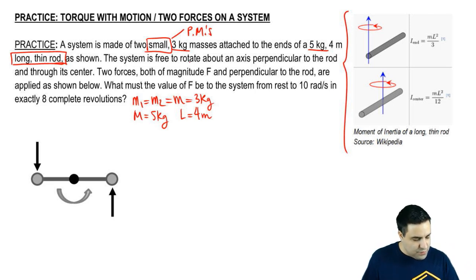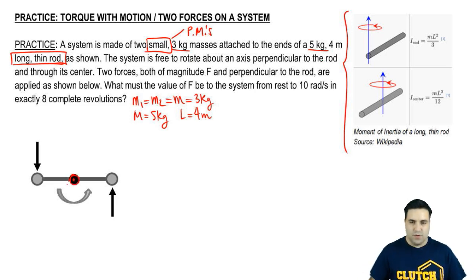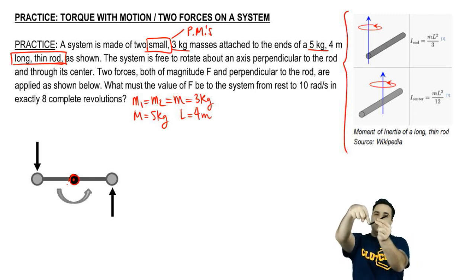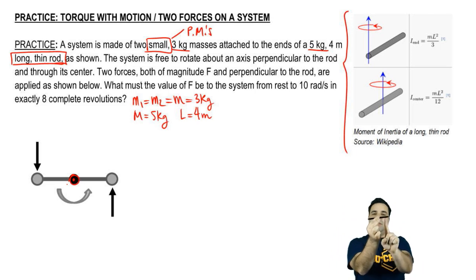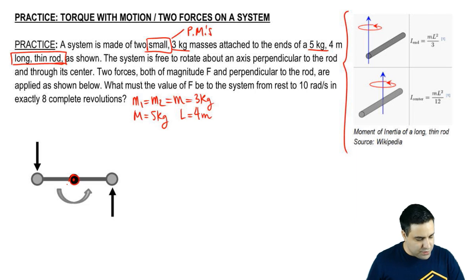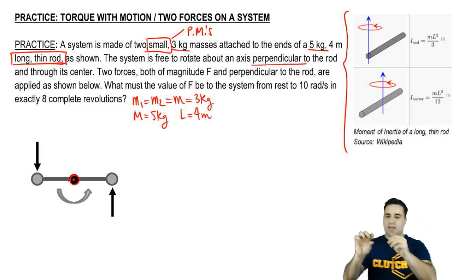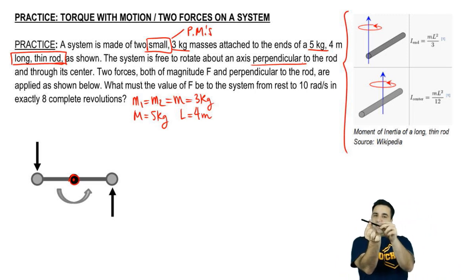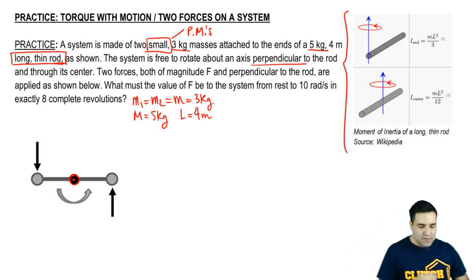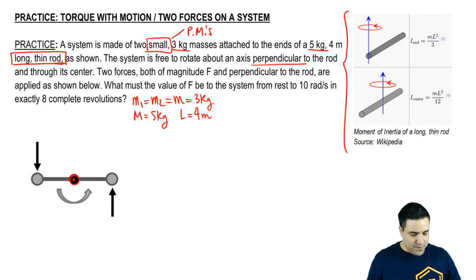The system is free to rotate about an axis perpendicular to the rod and through its center, as shown here. Imagine you have a rod with two little masses as caps at the ends. You have a force pushing one way and a force on the other side, both trying to get you to spin. So you've got these two forces doing this to the thing and it spins around its center. Perpendicular means 90 degrees — the axis is an imaginary line and you rotate around that line.